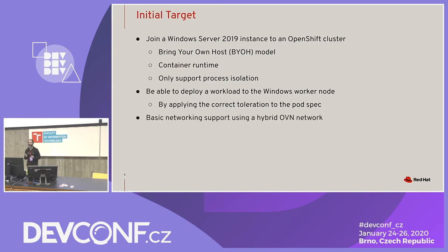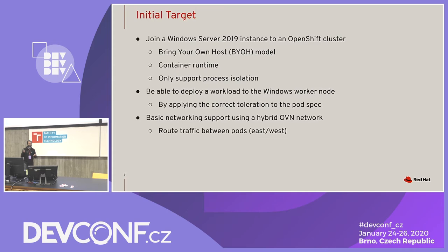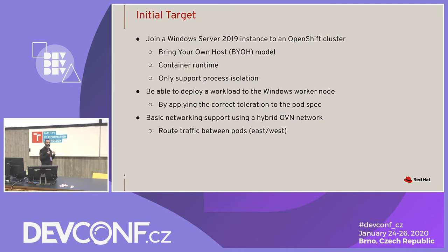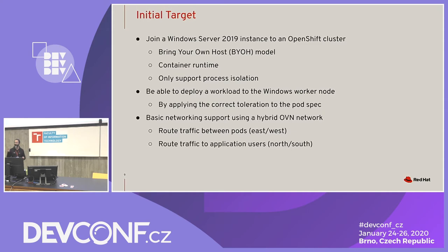A key difference is you cannot use the default OpenShift SDN network type if you want to run Windows workloads, because we carve out a piece of the network for Windows communication. This was done in partnership with Microsoft — the OpenShift SDN team worked closely with Microsoft. The Windows Container team glues those pieces together, and you also want to route traffic between Linux and Windows pods, and to external application users.